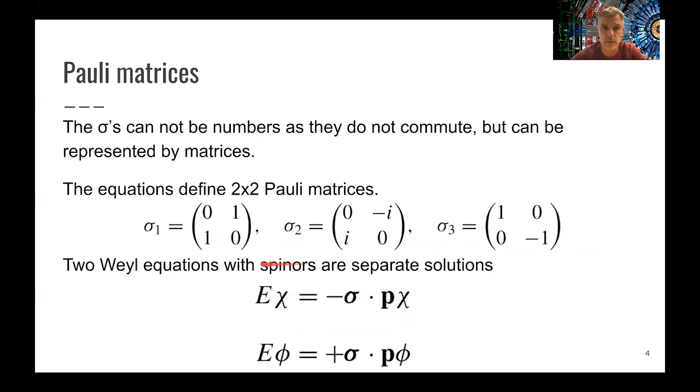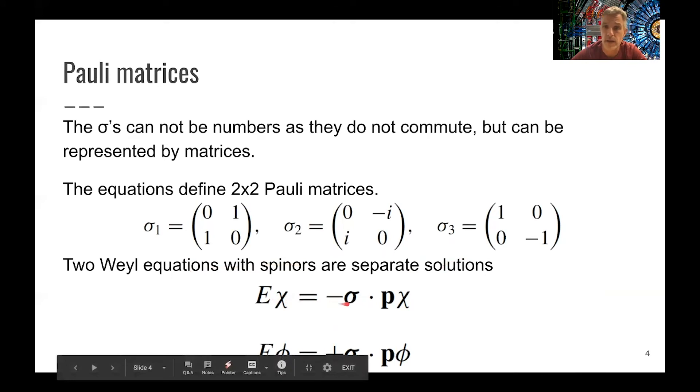Now, using this definition, we can rewrite the equations to energy times the field is equal to minus sigma times the momentum times the field. And find a second equation where just the sign flips. So the chi here and the phi are spinors. They are two-dimensional vectors. And the sigmas are our Pauli matrices.